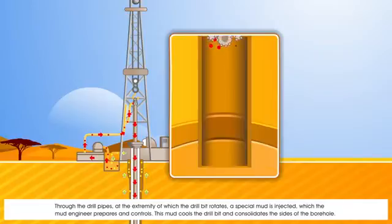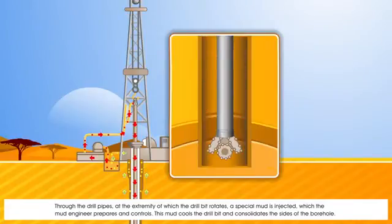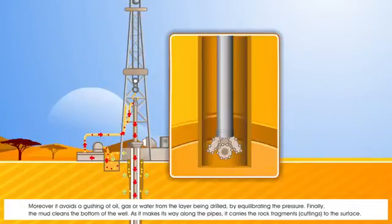Through the drill pipes, at the extremity of which the drill bit rotates, a special mud is injected, which the mud engineer prepares and controls. This mud cools the drill bit and consolidates the sides of the borehole. Moreover, it avoids a gushing of oil, gas, or water from the layer being drilled by equilibrating the pressure.